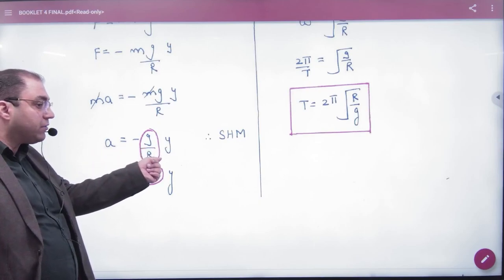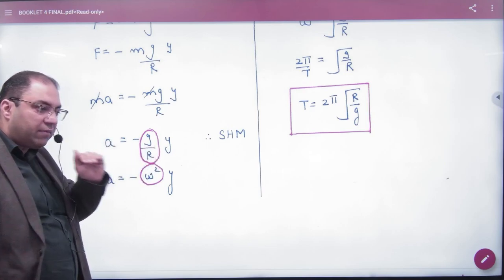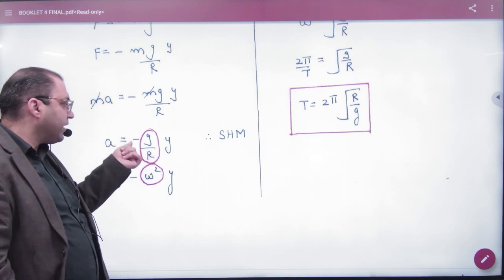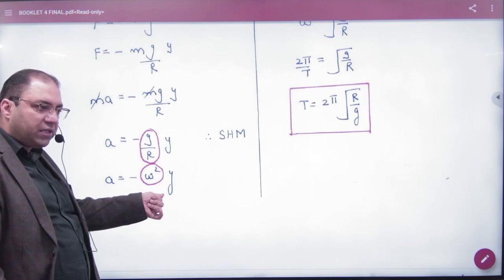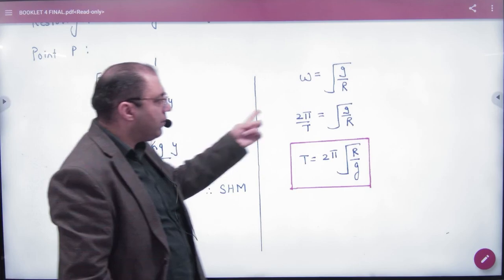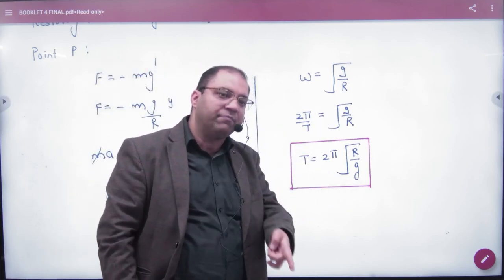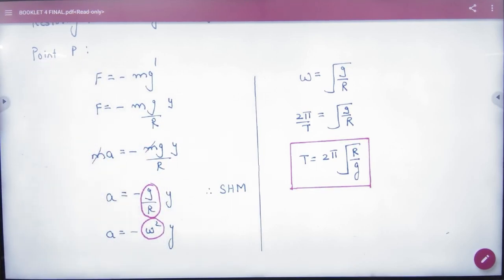Since y is distance from mean position, a is proportional to -y. This proves SHM. Compare with the SHM equation we learned to get omega. Since omega = 2π/T, cross multiply to get time period. The formula in the booklet: time period equals 2π√(R/g). If there's a tunnel through earth, the time period of a ball is 2π√(R/g).